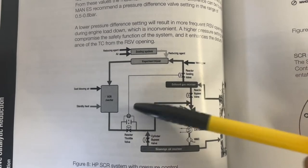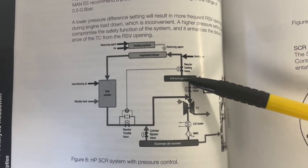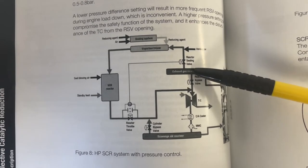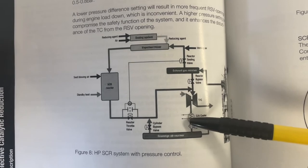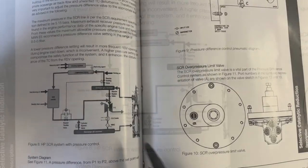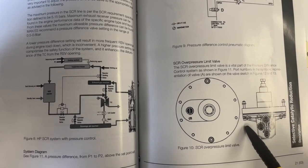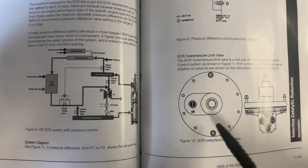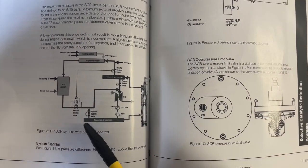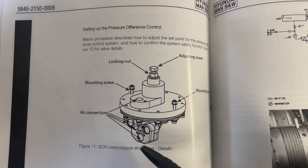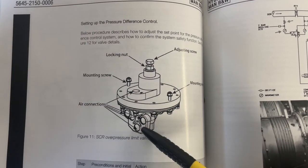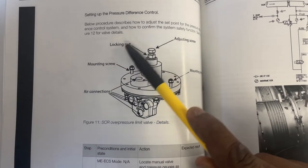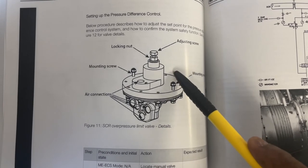When the RSV opens due to excessive pressure in the SCR line, a mass flow of air from the SCR will expand into the exhaust gas receiver. The resulting pressure buildup in the exhaust gas receiver must be controlled to avoid inappropriate scavenged air backflow and unwanted turbocharger disturbance. A lower pressure difference setting in the SCR over-pressure limit valve will result in more frequent RSV opening, while a higher setting will compromise the safety of the SCR system. It is very important to adjust this SCR over-pressure limit valve so that the pressure difference between the SCR line and receiver pressure never exceeds the range — mostly 0.5 to 0.8 bar.